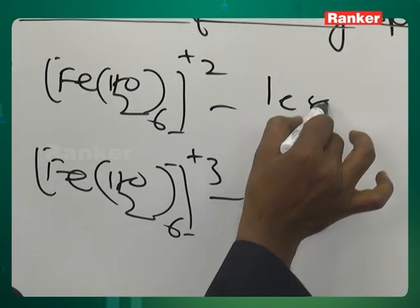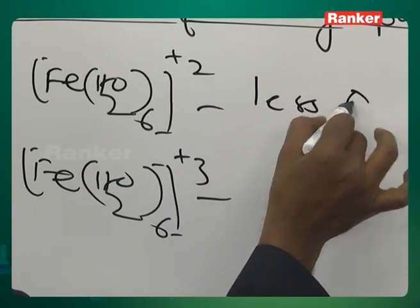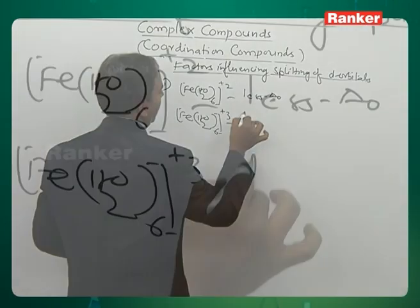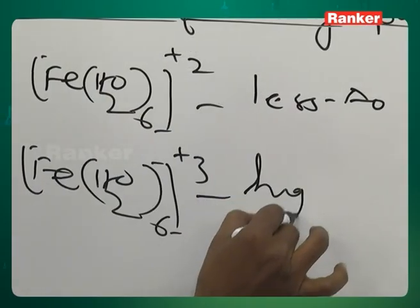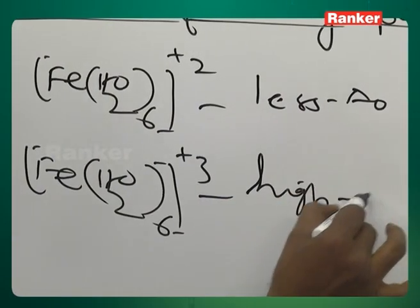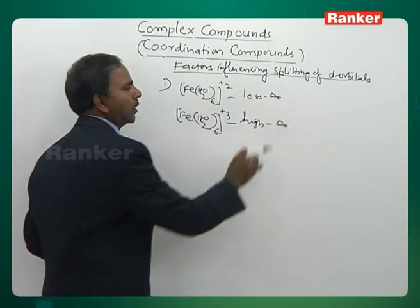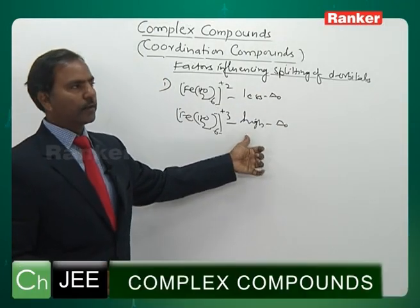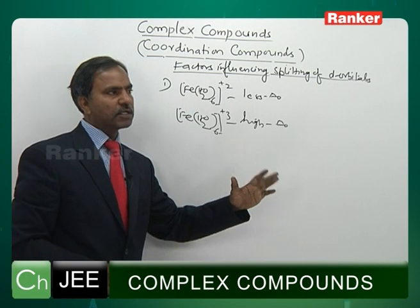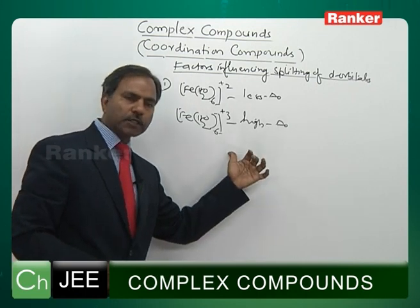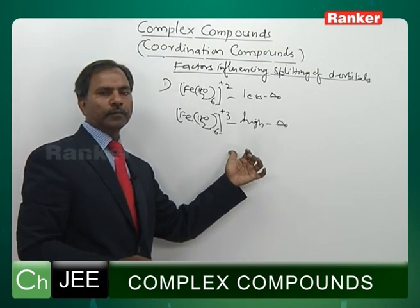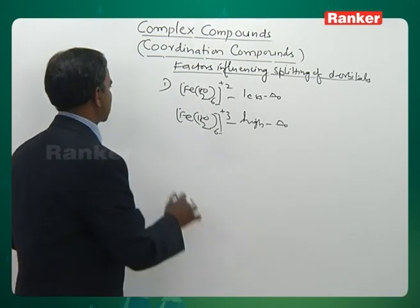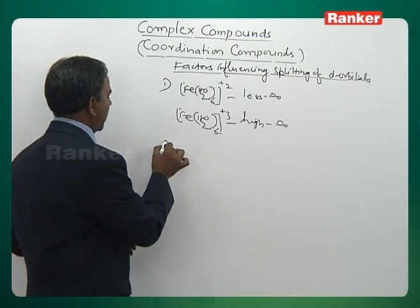So Fe(H₂O)₆²⁺ has less delta O, and Fe(H₂O)₆³⁺ has high delta O. Splitting of d orbitals is less for the plus-2 complex, and more for the plus-3 complex. Greater the charge density, greater will be the splitting of d orbitals.